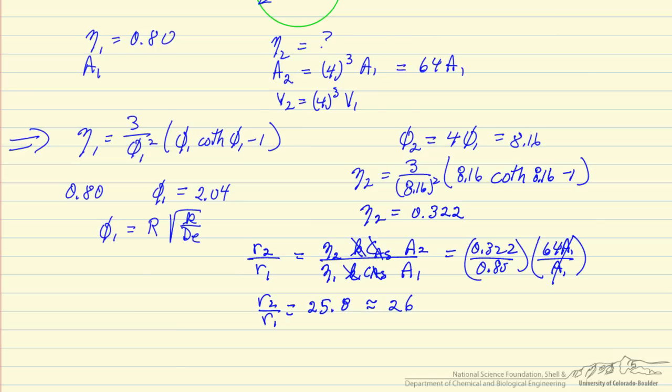So the surface area increased a factor of 64, but the rate only increased a factor of 26 because of the longer diffusion distance and the catalyst is being used less effectively.